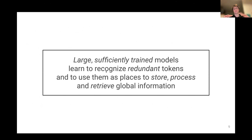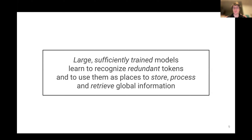Putting all of this together, we can formulate this hypothesis: large, sufficiently trained models learn to recognize redundant tokens — tokens that have nothing more compared to their neighbors — and use them as places to store, process, and retrieve global information. Basically the model forgot what was in these patches and used them as a kind of scratchpad to store information, process it, and retrieve it afterwards. It's a very surprising behavior — still a hypothesis, but one backed by empirical data and reasonable enough to try and design a fix.